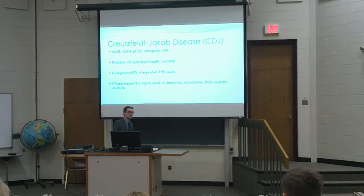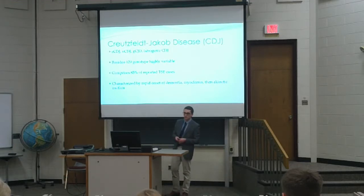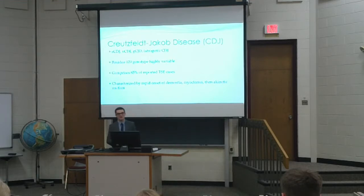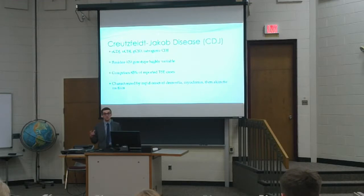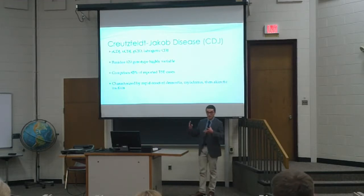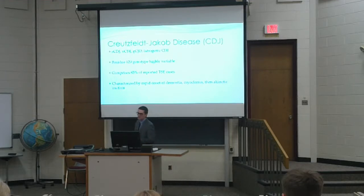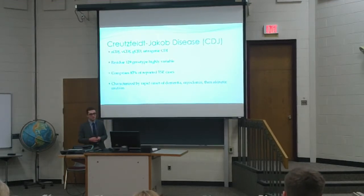Creutzfeldt-Jakob disease, or CJD, is the most common TSE, occurring in four forms: sporadic CJD, variant CJD caused by ingestion of infected material, genetic CJD, and iatrogenic CJD. CJD is characterized by high variability at residue 129 of the protein due to genetic differences, with mutations arising spontaneously or inherited. CJD comprises 85% of all TSE cases, yet remains rare, occurring in about one per million people. It is characterized by rapid onset of dementia, myoclonus, and then akinetic mutism.